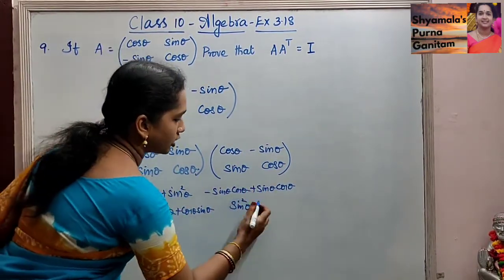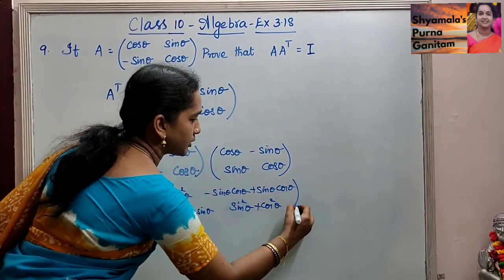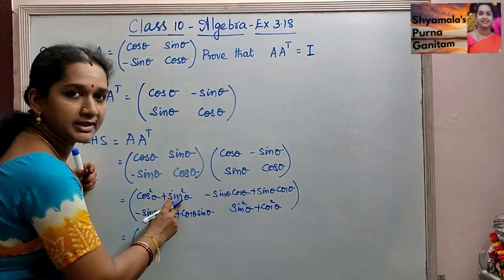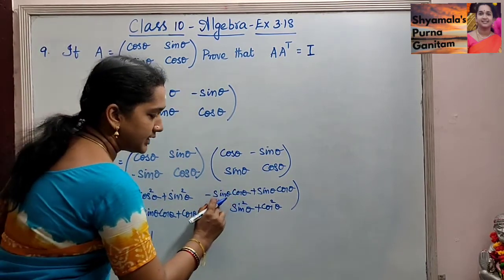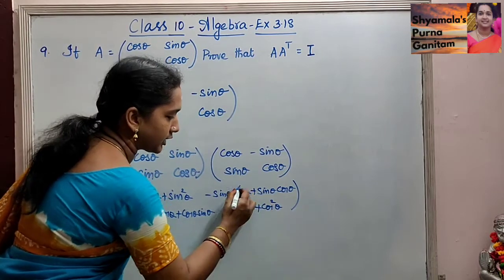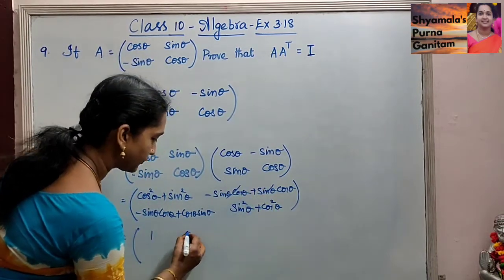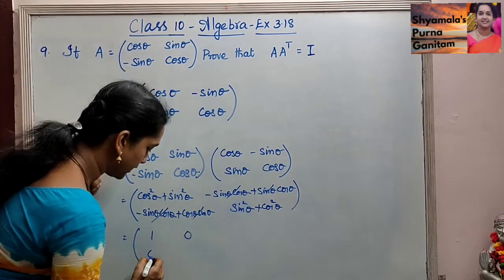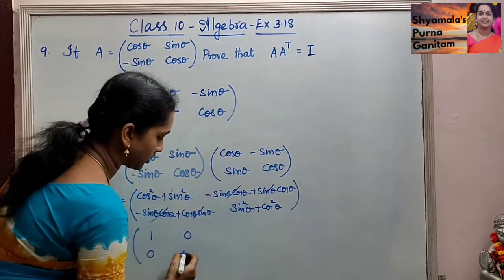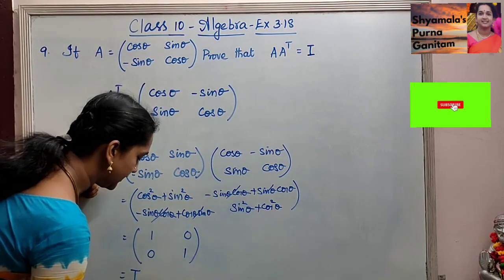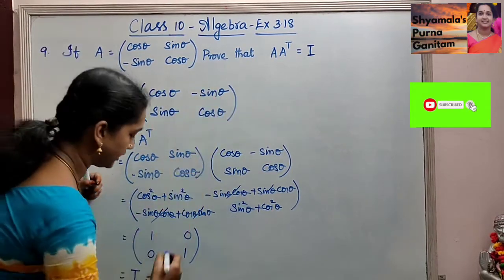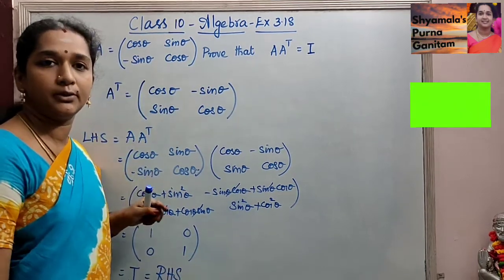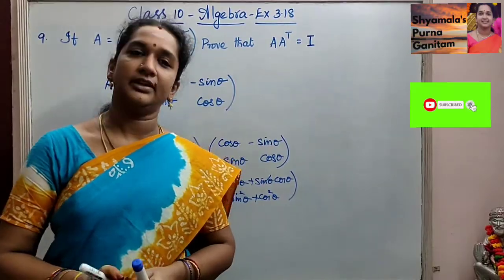Cos theta × cos theta = cos² theta. So when we simplify, cos² theta + sin² theta = 1. Then -sin theta cos theta + sin theta cos theta = 0. Same way, -sin theta cos theta + cos theta sin theta = 0, and sin² theta + cos² theta = 1. So we get the identity matrix — that is what we were asked to prove. Please do, thank you.